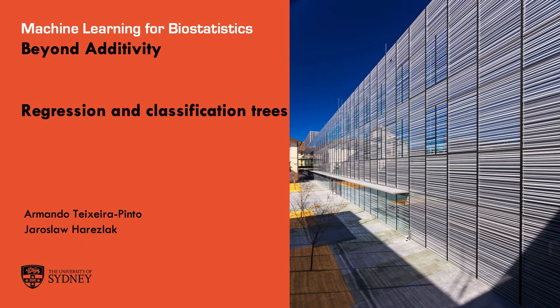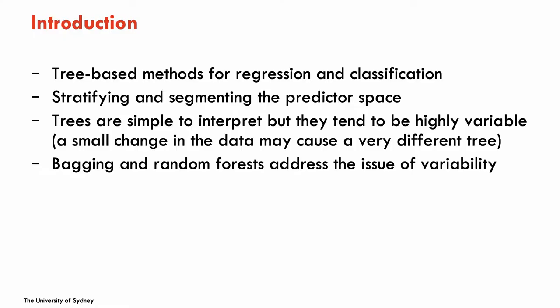We'll start with regression and classification trees. Trees can be used for regression problems when the outcome is continuous, or for classification problems when the outcome is categorical. What trees do is basically stratify and segment the predictor space. The advantage of trees is that they are quite easy to interpret, but they tend to be highly variable — a small change in the data can cause a very different tree and quite different predictions. Bagging and random forests address this problem of high variability.